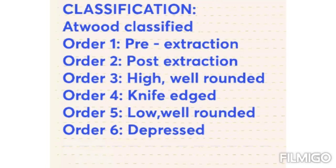The classification for RRR is given by Addued. The Addued classification has six orders: Order 1 is pre-extraction, Order 2 is post-extraction, Order 3 is high well-rounded, Order 4 is knife-edged, Order 5 is low well-rounded, and Order 6 is depressed.